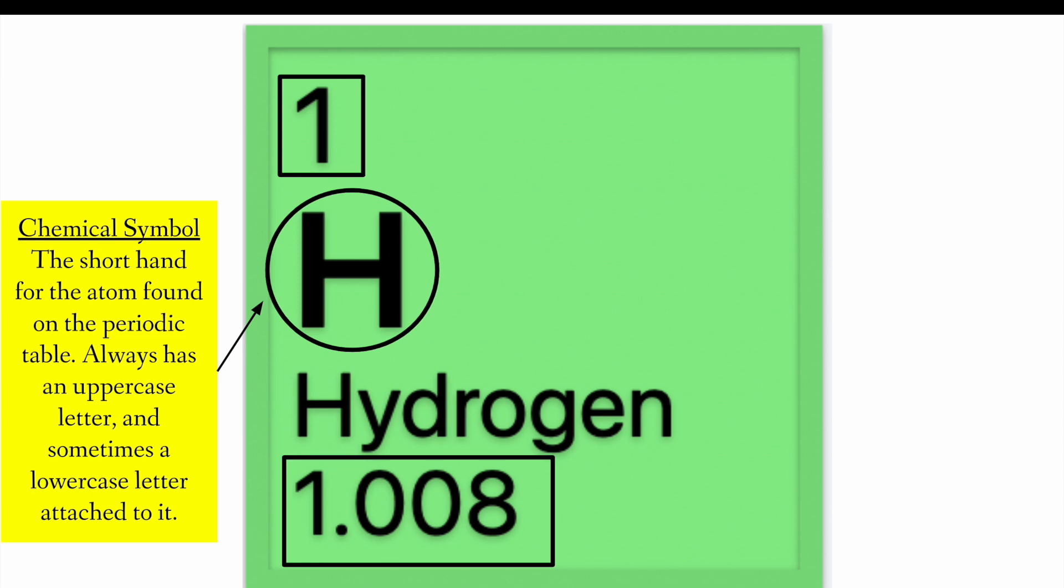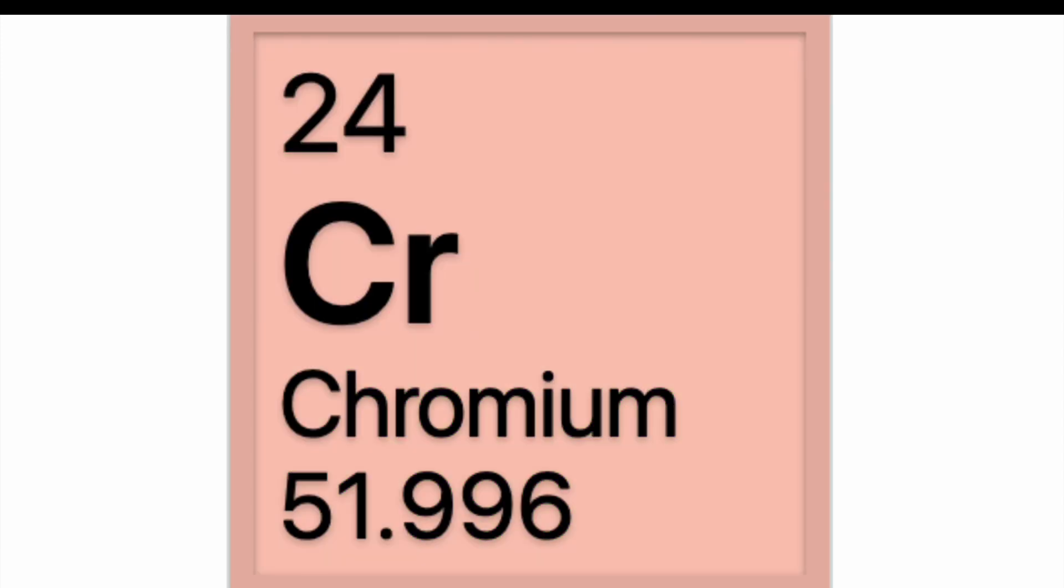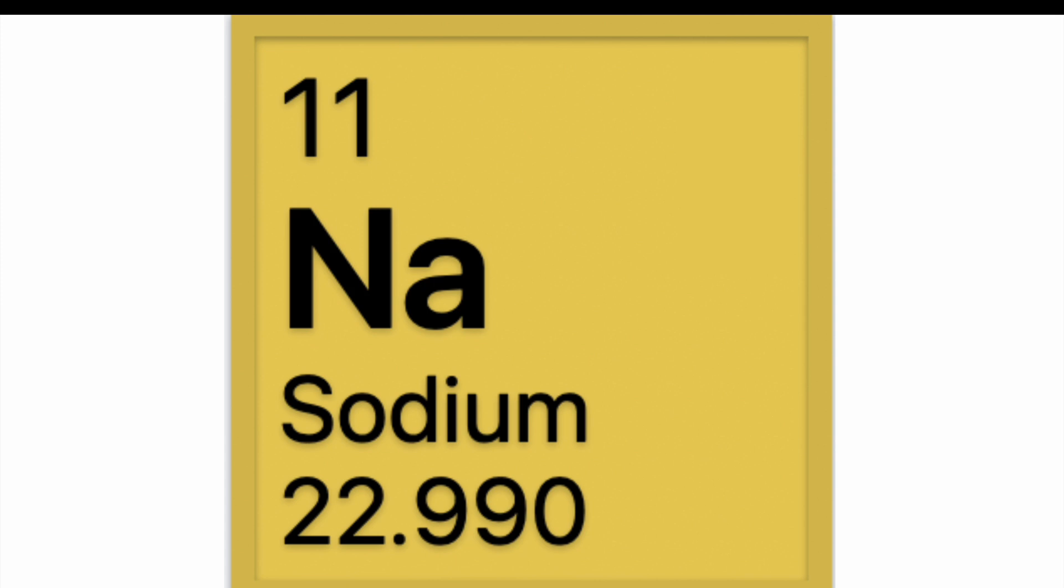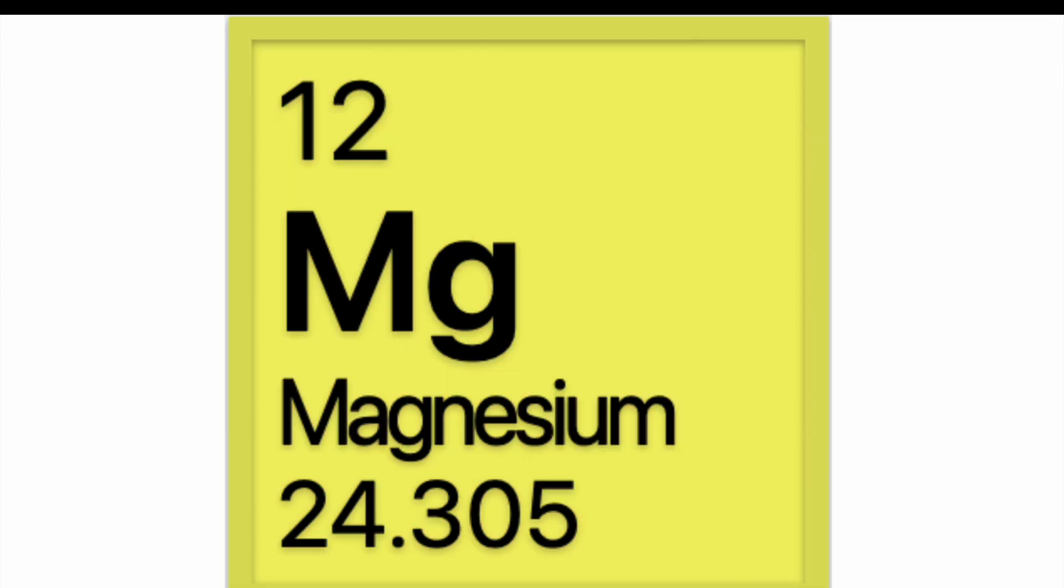So, what's circled is called the chemical symbol. This is the shorthand for the atom found on the periodic table. It always has an uppercase letter and sometimes it has a lowercase letter attached to it. You can see this for chromium. Chromium symbol is Cr. Sodium symbol is Na. Magnesium symbol is Mg.